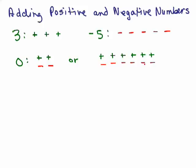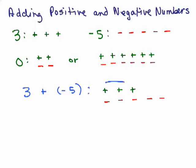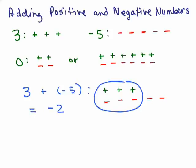So let's say I wanted to add 3 plus negative 5. What would that look like? If I put 3 positives together along with 5 negatives, notice I've got more negatives when I'm all done. These kind of cancel themselves out — that's like a 0. So I'm left with more negatives, and how many more? I've got 2 more negatives, so my answer is going to be negative 2.